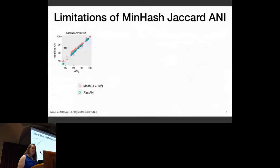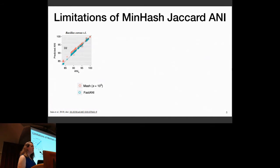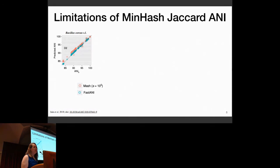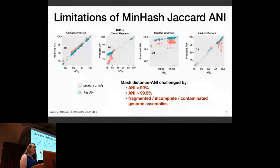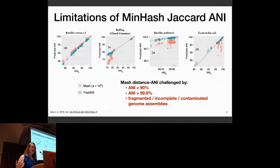I really like these figures from the Fast ANI paper back in 2018. What we're looking at is the orange plots, which are MASH sketches — actually quite large MASH sketches. In this first data set, it does really well across the range of ANI. On the x-axis you have ANI-B, which is blast-based ANI and still considered the gold standard, and on the Y-axis you have predicted ANI for MASH and Fast ANI. But looking at other data sets in the paper, there are some challenges for MASH ANI, particularly at low sequence identity — under 90% — or very high sequence identity, or often with fragmented, incomplete, and contaminated genome assemblies.